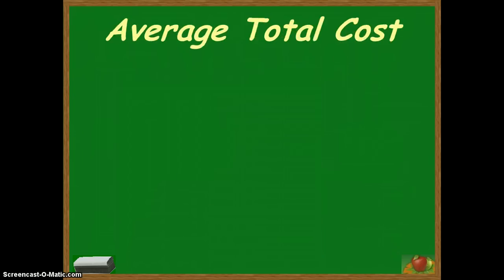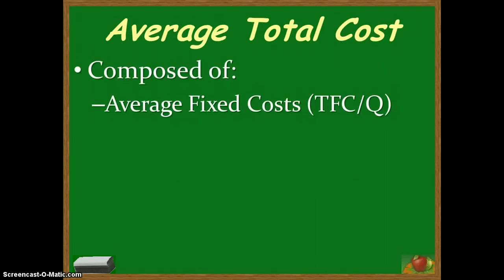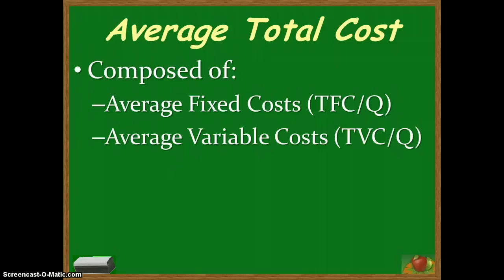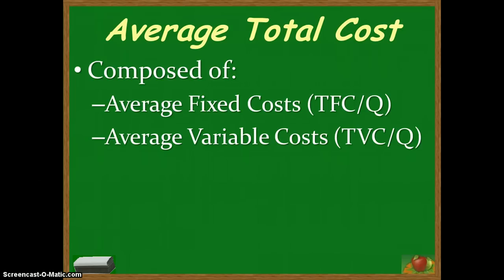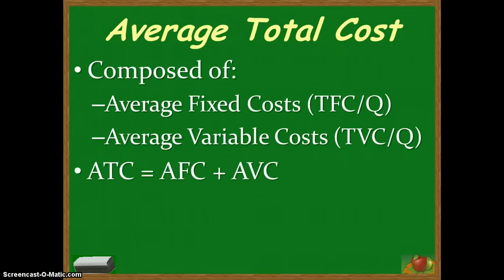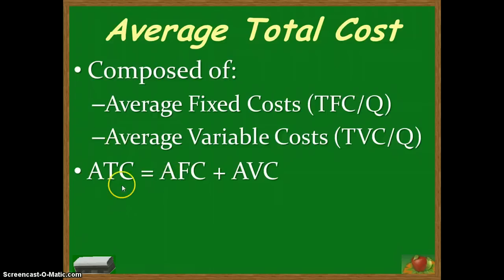Another cost we could talk about is average total cost, which is made up of average fixed cost and average variable cost. If we take fixed costs and divide them by total output, that's our average fixed cost. Total variable cost divided by output gives average variable cost. Average total cost is total cost divided by output, but it can also be written as: average total cost equals average fixed cost plus average variable cost.